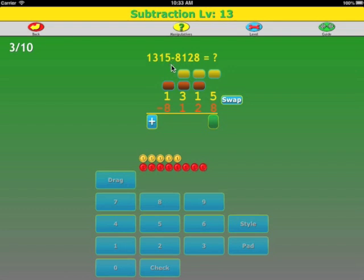1,315 minus 8,128. We put 1,315 on top, 8,128 on the bottom in column format. We see that this number is larger, so we swap. We immediately change the answer to negative.